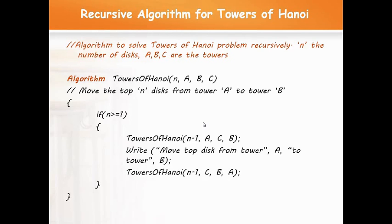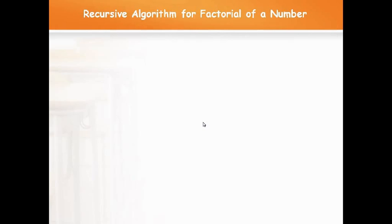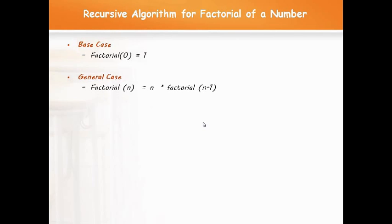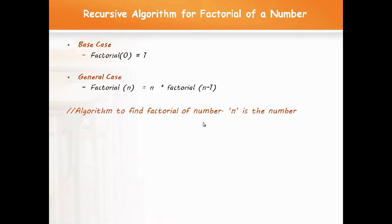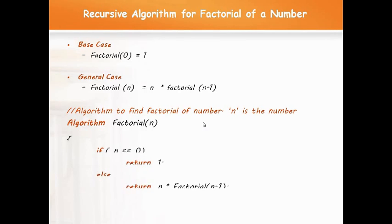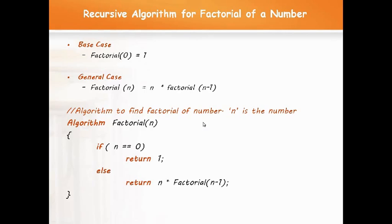Let us see another example: a recursive algorithm for the factorial of a number. The base case is factorial of 0 equals 1. The general case is factorial of n equals n multiplied by factorial of n minus 1. For example, 4 factorial equals 4 into 3 factorial. The algorithm: given n, if n equals 0, return 1; else return n into factorial of n minus 1.